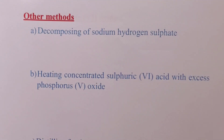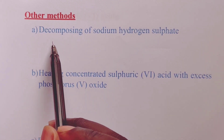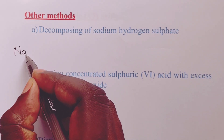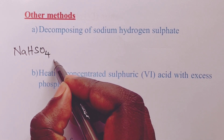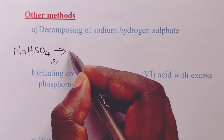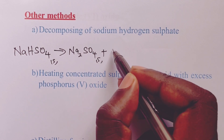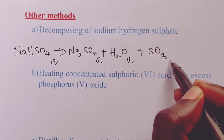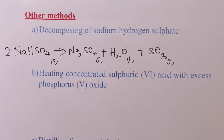We now look at other methods available for preparation of sulfur trioxide. The first is decomposition of sodium hydrogen sulfate (solid). When we decompose solid sodium hydrogen sulfate, we get sodium sulfate, water, and sulfur trioxide gas, balanced with a 2 on sodium hydrogen sulfate.